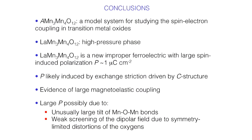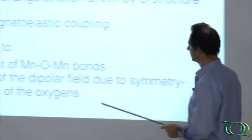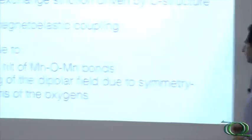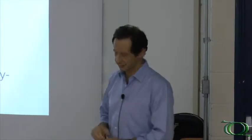To conclude, I hope I convinced you that this is an interesting system for studying the spin-electron coupling and the spin-lattice coupling in transition metal oxides. These are high-pressure phases. This compound with lanthanum is a new improper ferroelectric with large spin-induced polarization of the order of one microcoulomb per centimeter squared. We have indication that this polarization is induced by exchange striction driven by the C-type structure, due to magneto-elastic coupling and the large tilt of the bonds, and weak screening due to the symmetry-limited distortion of the oxygen. Therefore it would be interesting to investigate further on single crystals the properties of this system.